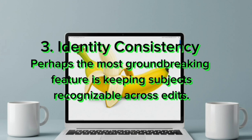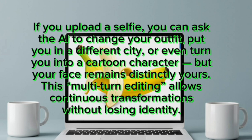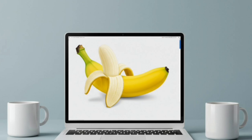Third, Identity Consistency: perhaps the most groundbreaking feature is keeping subjects recognizable across edits. If you upload a selfie, you can ask the AI to change your outfit, put you in a different city, or even turn you into a cartoon character — but your face remains distinctly yours. This multi-turn editing allows continuous transformations without losing identity.